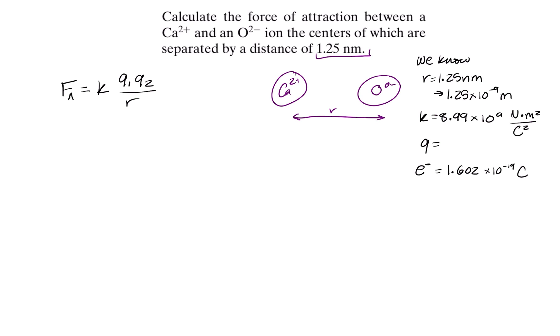So what are we going to do to start? We need our q values. So q1 and q2 are the charges of each of our atoms. And so if we remember when we solved for these, we're going to take the charge of an electron, and we're going to multiply that by the valence number.